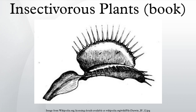A second English-language edition was published in 1889 after Darwin's death, edited with additions and footnotes by Francis Darwin. From his initial observations in 1860 of Drosera rotundifolia, the common sundew, Darwin developed a series of experiments ultimately establishing how excellently adapted these plants are to catching insects.